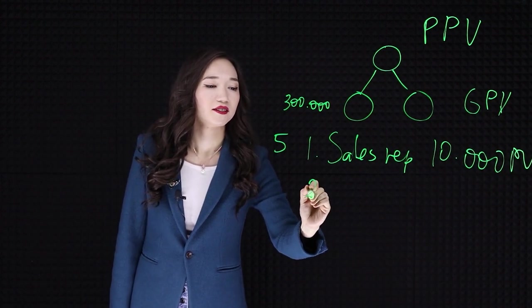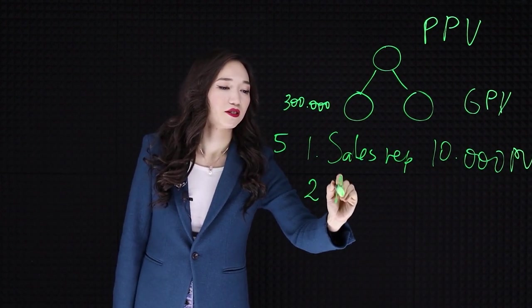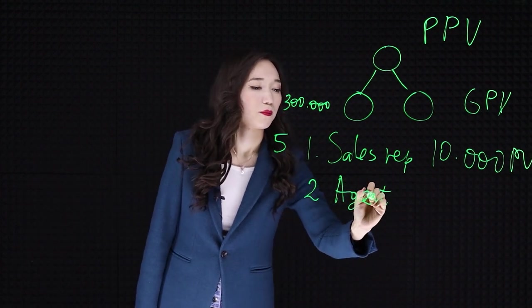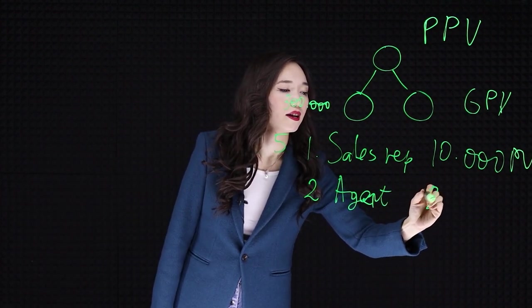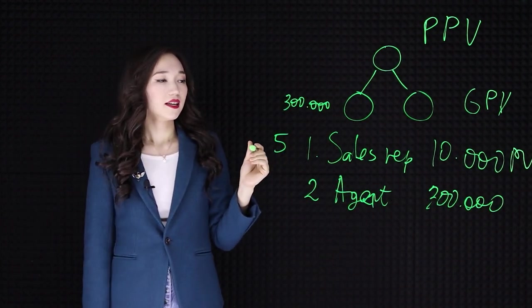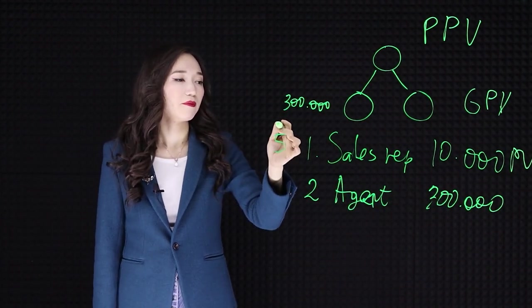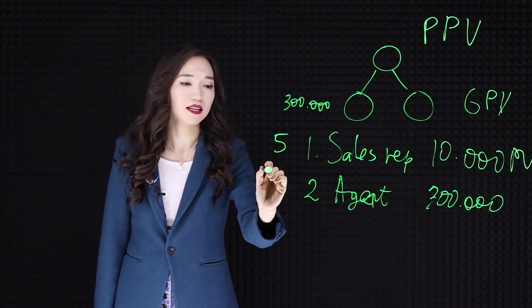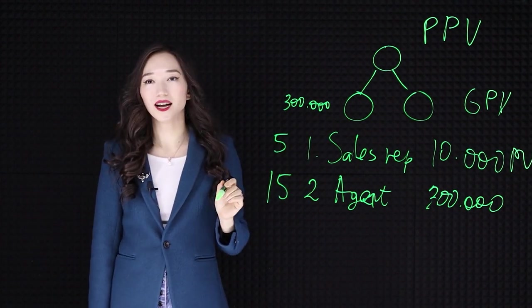The second type is agent. Personal PV, 300,000. So when your smaller leg makes 300,000 PV, you get a score 15, which is three times more money.